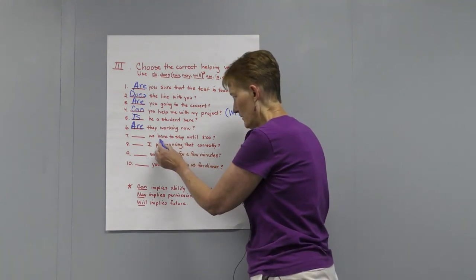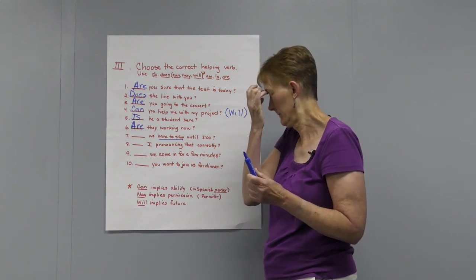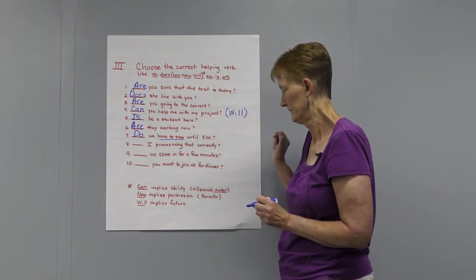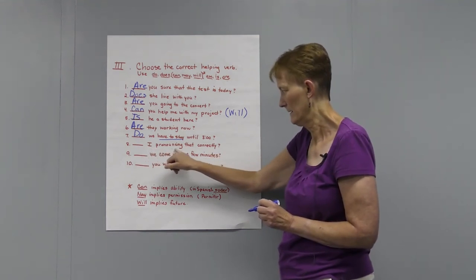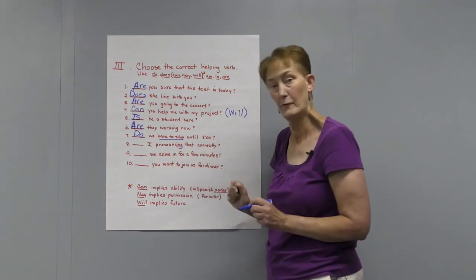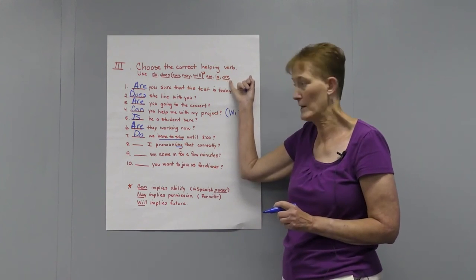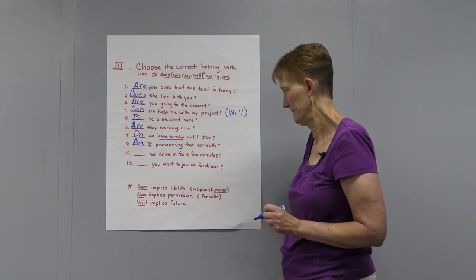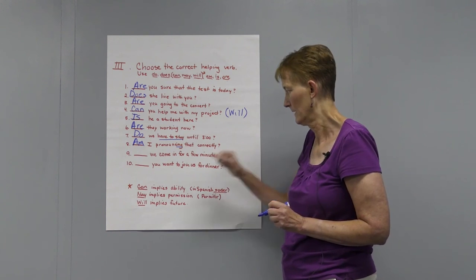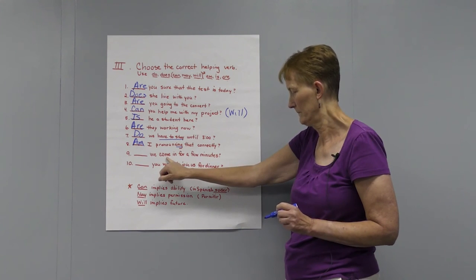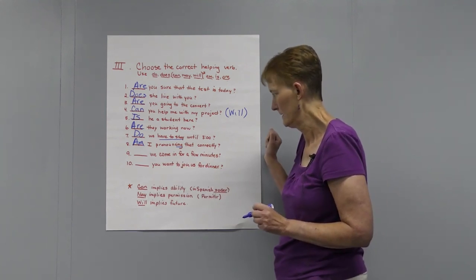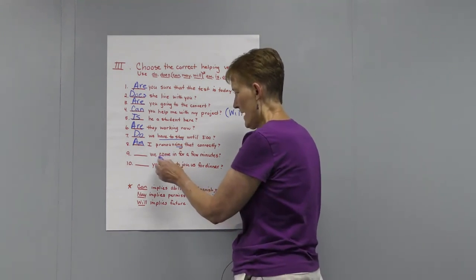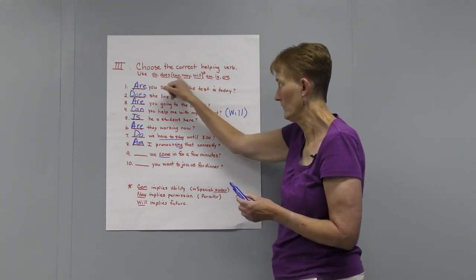Here you actually have two verbs: 'have to stay' — so it's a verb phrase, and you need 'do.' Here's your subject 'I' with the -ing form of the verb, so again you have to use to be as your helping verb. So 'am': Am I pronouncing that correctly? 'Come' is your main verb. Did you come up with two different possibilities? Since you have a main verb, you have to have one of these as a helping verb.